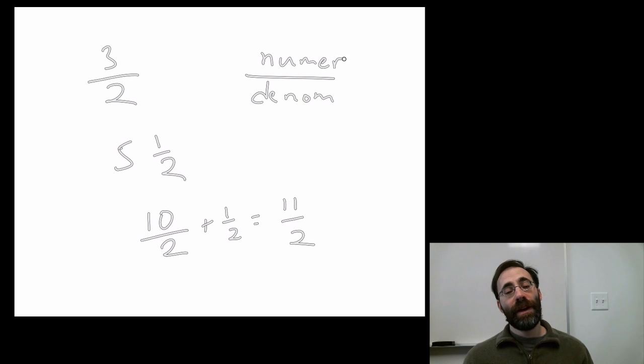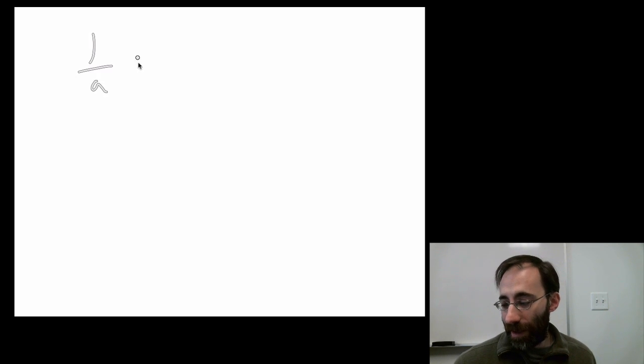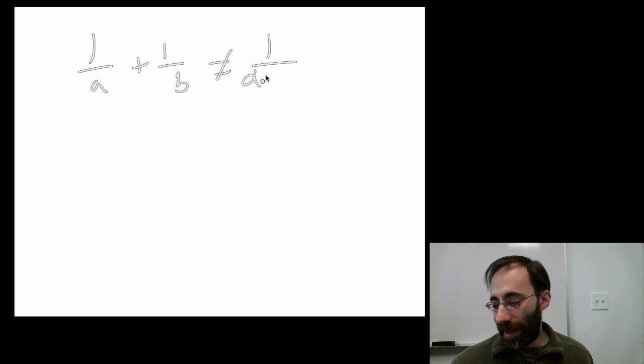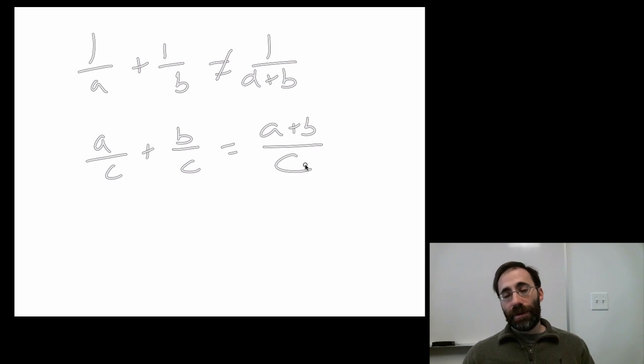If the denominator is the same, you can add them. If they're not the same, you can't add them. So, one over a plus one over b does not equal one over a plus b. However, a over c plus b over c does equal a plus b over c. So the biggest error people tend to make is just adding fractions without paying attention to the fact that the denominators must be the same in all cases to add them.